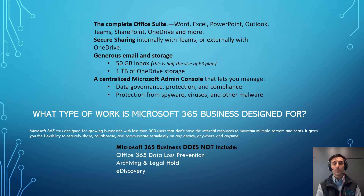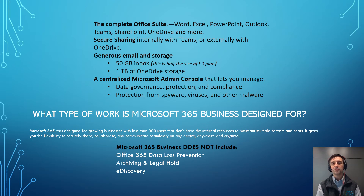Here's what we're looking at when we talk about Microsoft 365. You get the complete Office Suite — Word, Excel, PowerPoint, Outlook, Teams, SharePoint, OneDrive, and more. You also get secure sharing, which would be internally with Teams or externally with OneDrive. You get generous email and storage: 50 gigabytes in your inbox and one terabyte of OneDrive storage. And you also get a very easy-to-use admin console that lets you manage protection, compliance, and there are some great built-in features to protect you from spyware, viruses, and other types of malware.